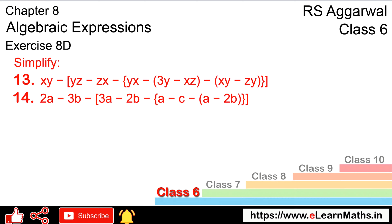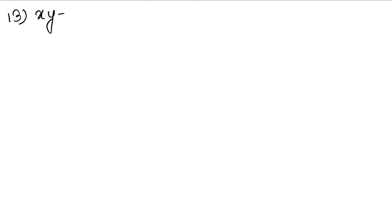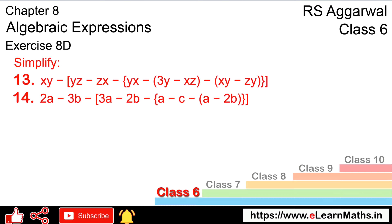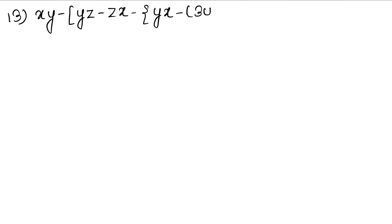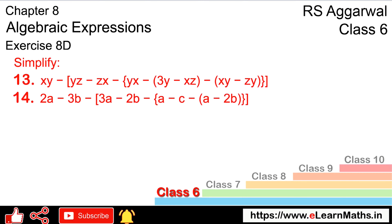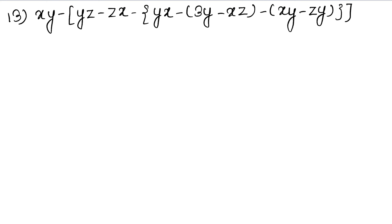Let's do question number 13 of exercise 8D, Algebraic Expressions. The question is: XY minus bigger bracket YZ minus ZX minus curly bracket YX minus small bracket 3Y minus XZ small bracket closed, minus small bracket XY minus ZY, then three brackets closed.